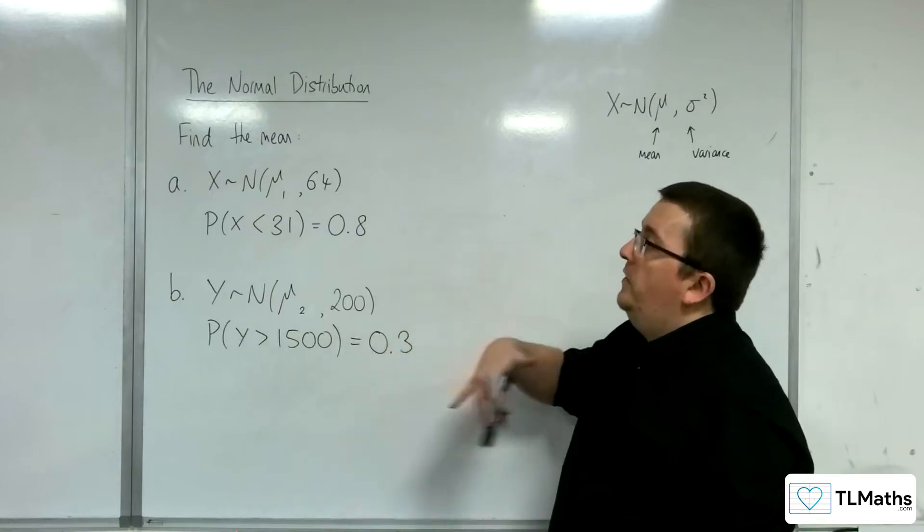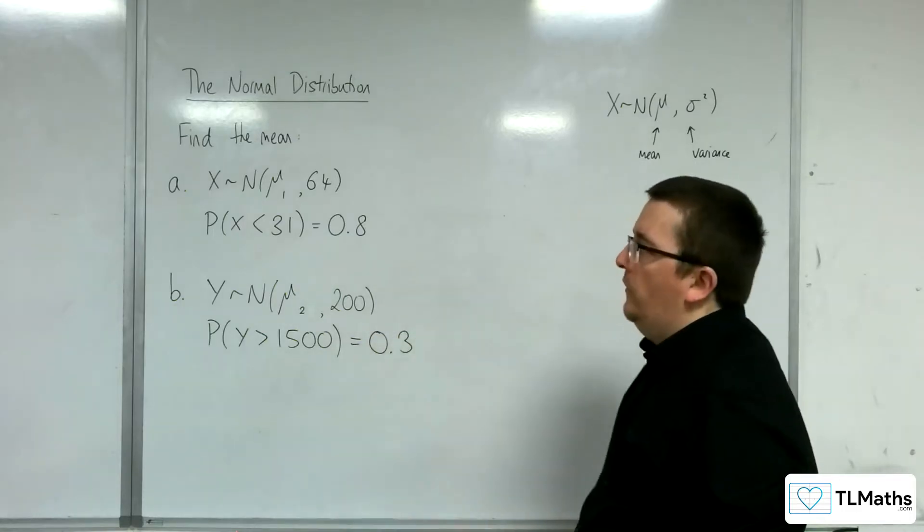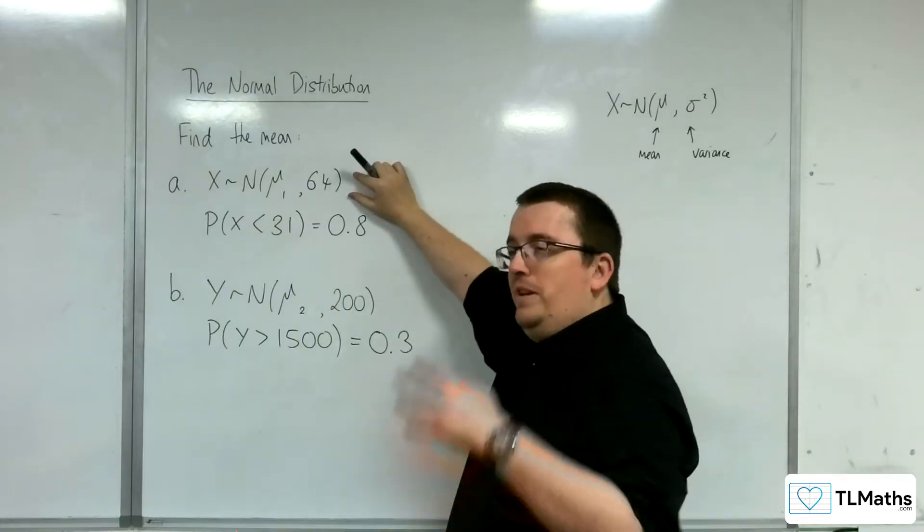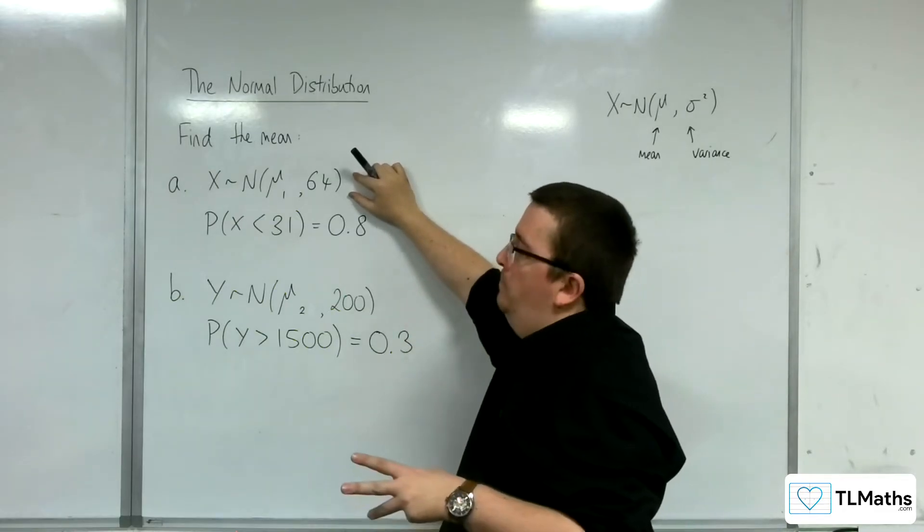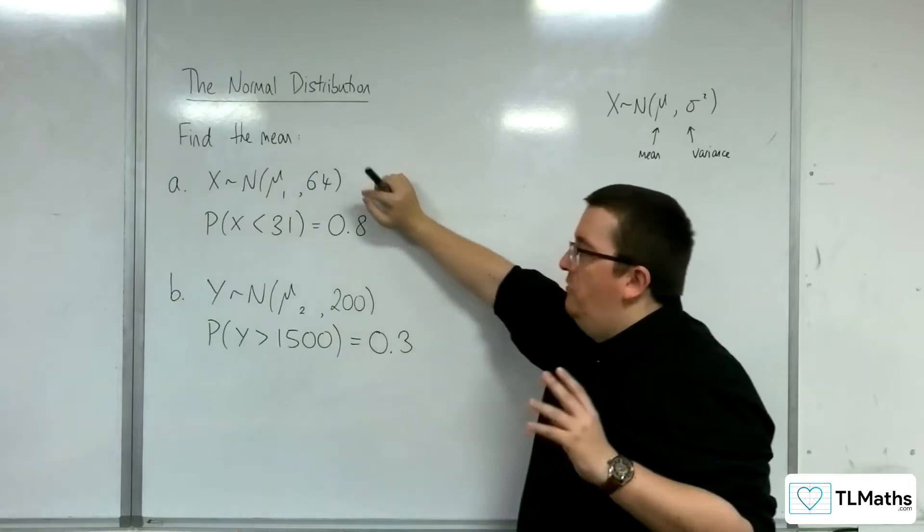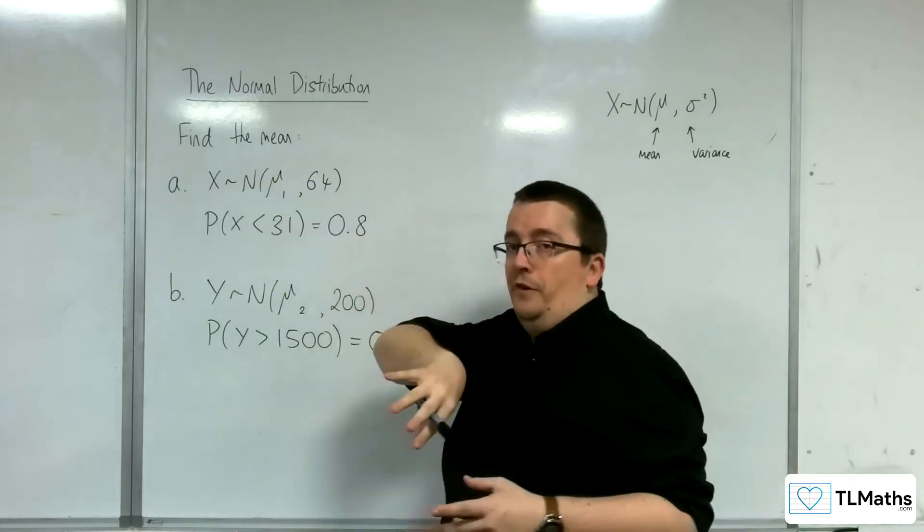In this video, we're going to be finding a missing value, the missing mean in each of these cases. So we have a situation where we have the distribution, we know the variance, but we don't know the mean. We do have a bit of information about it though, and we're going to use that information to work backwards to find the mean.